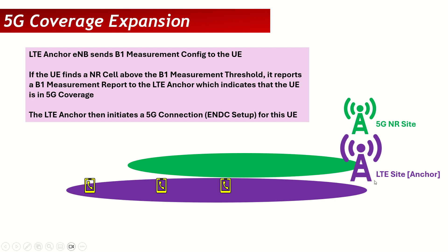Before we do that, we need to understand the whole context. In a 5G NSA network, we have a scenario where we have an LTE anchor. The purple color shows the LTE coverage while the green one shows the 5G coverage. You have multiple mobiles on LTE, and then the LTE site adds the 5G cell for these mobiles so that they can get the 5G service. The LTE site has to ask these 5G mobile handsets: are you in 5G coverage? If they say yes, the LTE site adds the 5G cell for them.